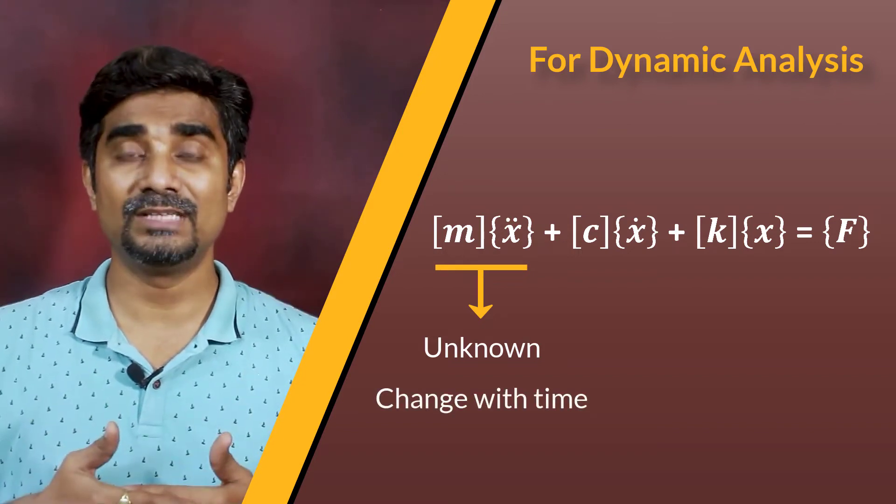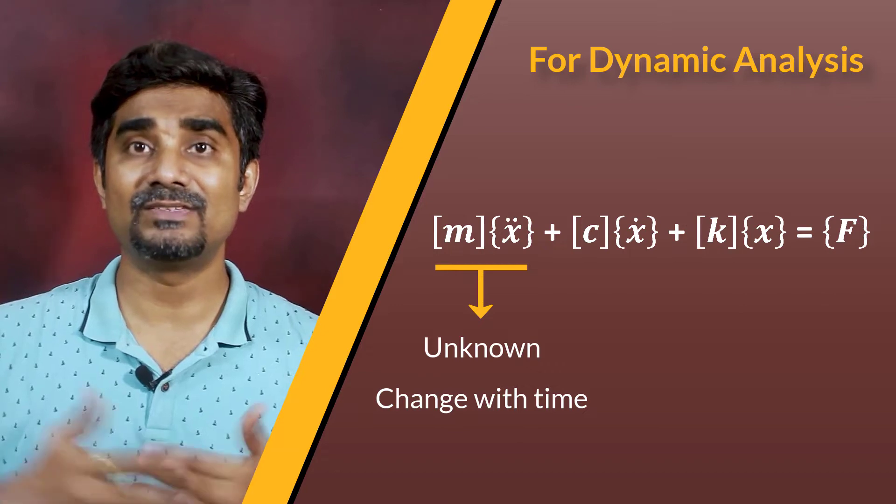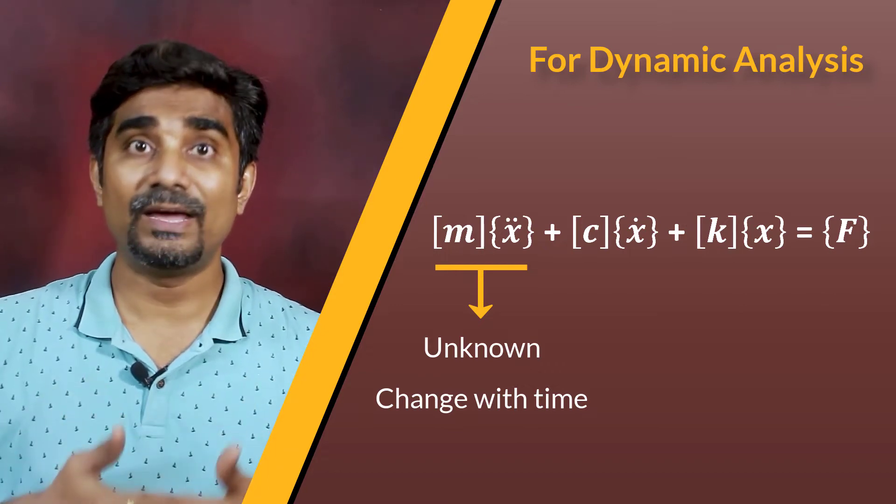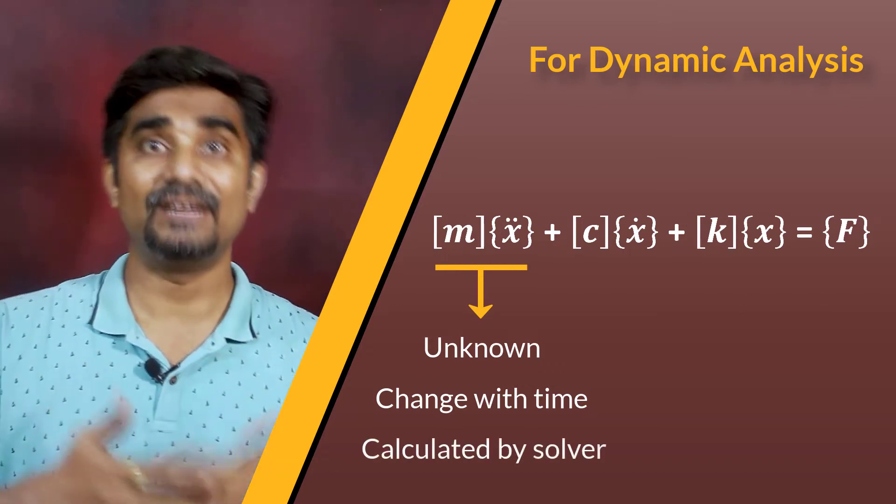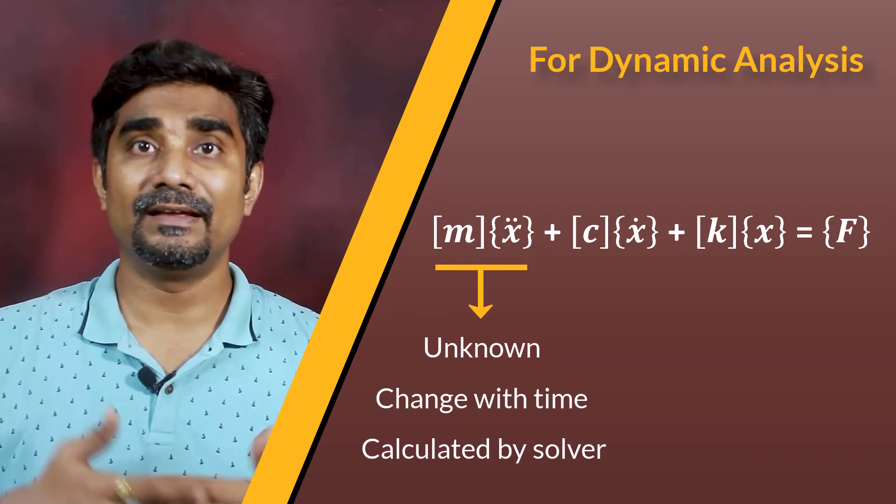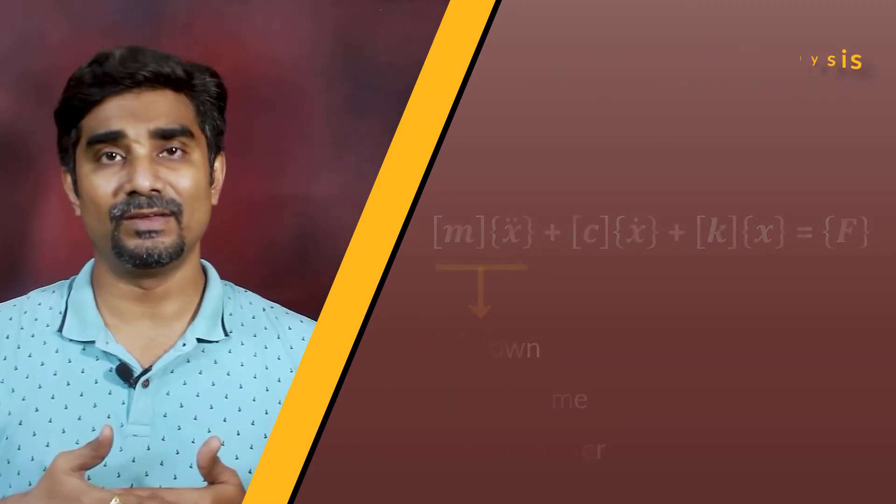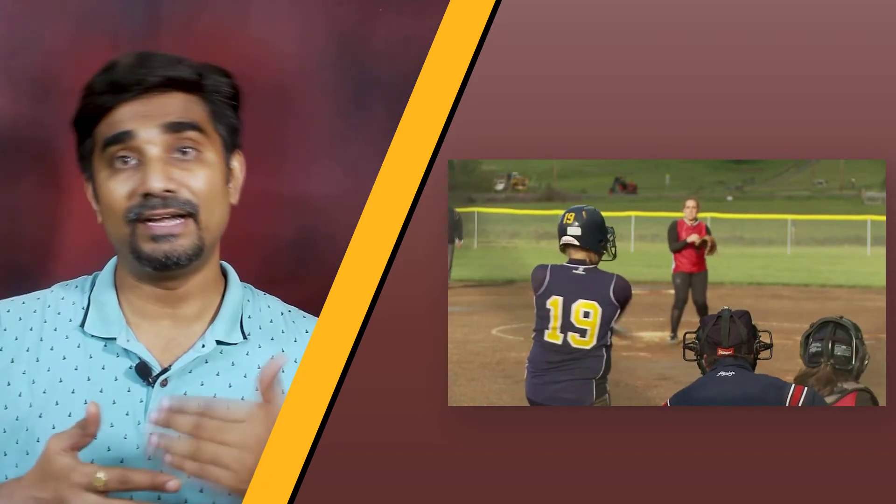Unlike inertial loads, we can't treat this term as known force. So, that is why it remains on the left side of the equation and is calculated by the solver. We can think of this like a ball hitting a bat. The ball may start with a constant acceleration, but contact with the bat will change the magnitude and direction of the ball's acceleration, which needs to be computed by the solver.